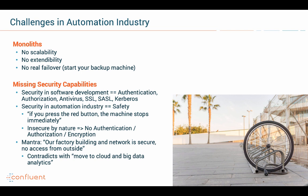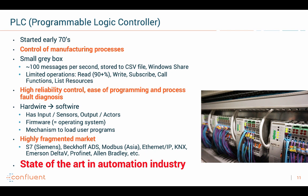Another very concerning thing is that in automation industry, you typically have no security capabilities. Security in automation industry typically means safety — meaning if you press that button to stop the machine, then it stops. That's safe. Machines and industrial IoT are insecure by nature, especially in 10–20–30-year-old factories. There's no authentication, authorization, or encryption. The mantra is more like: our factory building and network is secure because there's no access from outside. This is really contradictory when all companies want to move data to the cloud for big data analytics.